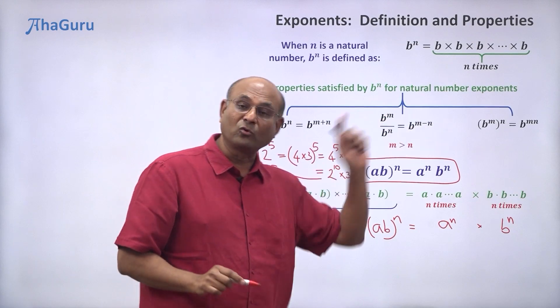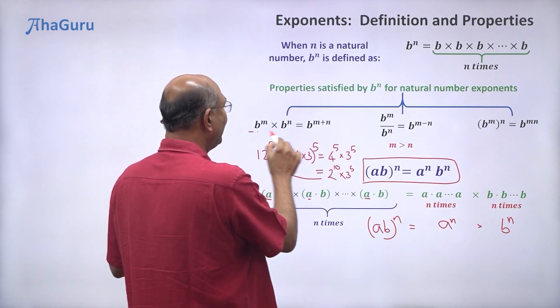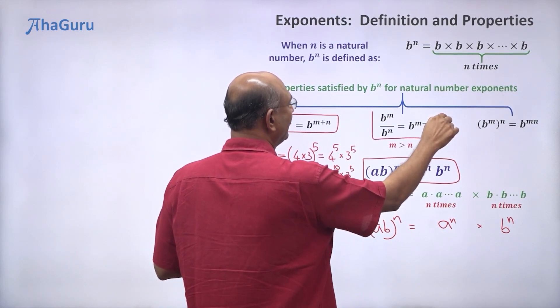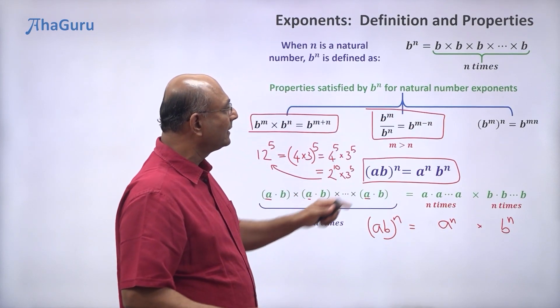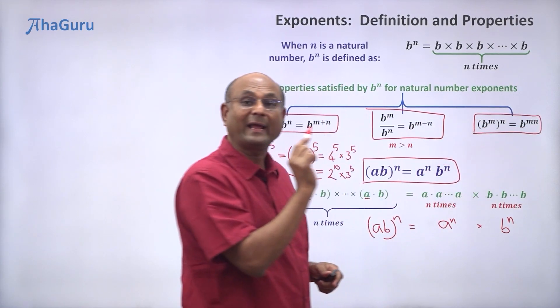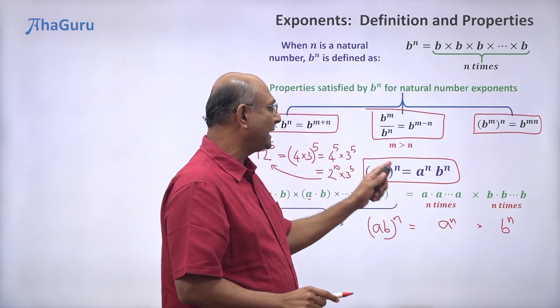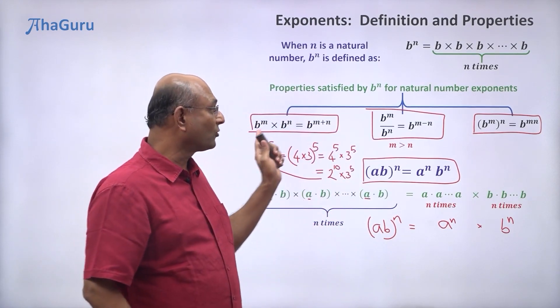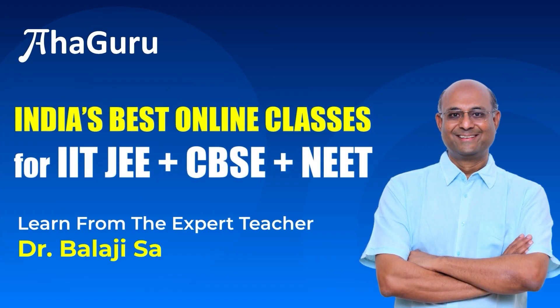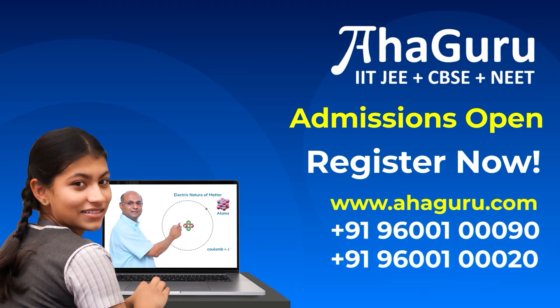So these four rules are extremely important. First: b power m into b power n equals b power m plus n. Second: b power m divided by b power n equals b power m minus n. Third: b power m whole power n equals b power mn. Fourth: (ab) power n equals a power n into b power n. You must be very conversant with all four of them.